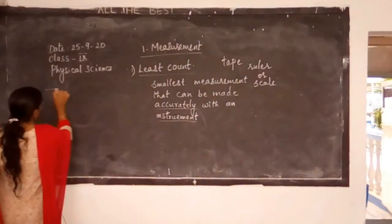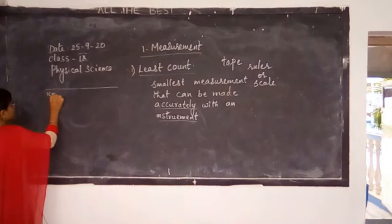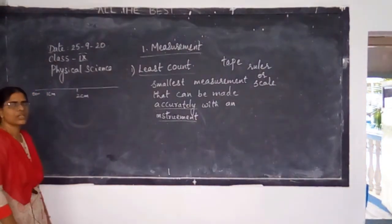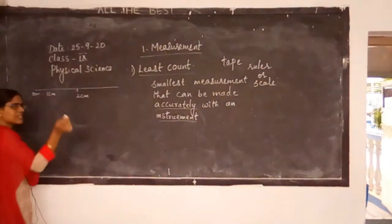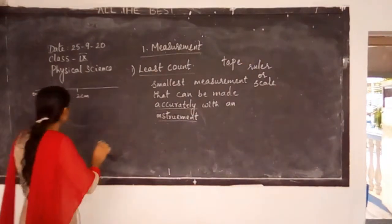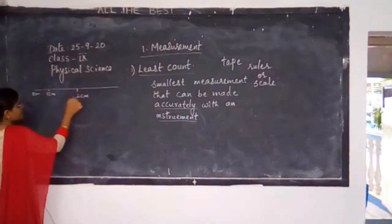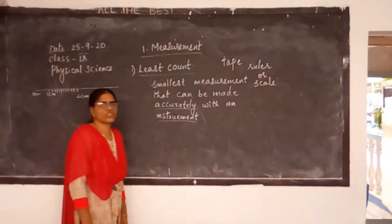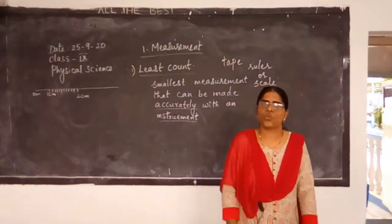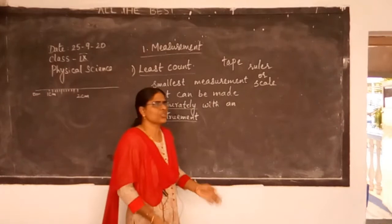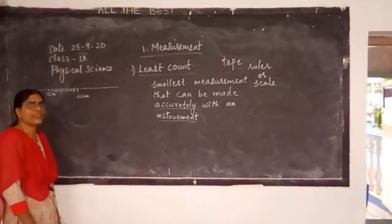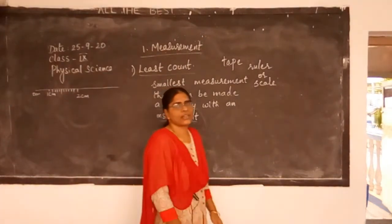Smallest measurement that can be made accurately — meaning exactly — by using an instrument is called the least count, the minimum count. For example, if you want to measure a length, you use a ruler or a scale. The minimum value that can be measured using your scale is called the least count of your scale.